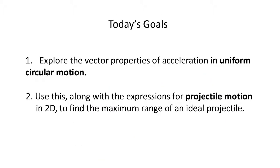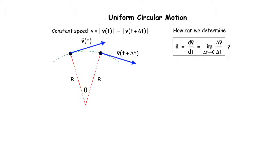Here's what we're going to work through today: we're going to explore more about vectors in uniform circular motion. We're thinking about another simplification, and there are a lot of misconceptions to be careful about. We're going to use these vectors along with expressions for 2D projectile motion to find the maximum range of an ideal projectile — basically the hammer toss.